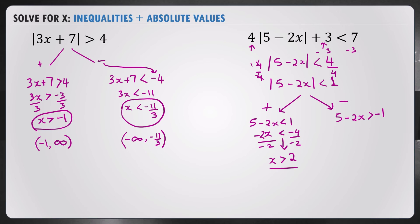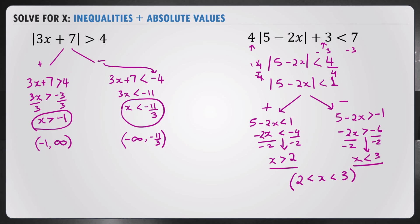Then for the negative case: 5 minus 2x is greater than negative 1, so negative 2x is greater than negative 6. Dividing by negative 2, the sign flips and becomes less than, giving x is less than 3. So x lies between 2 and 3, and we can rewrite this in interval notation as 2 is less than x which is less than 3 — numbers between 2 and 3 not including 2 or 3.